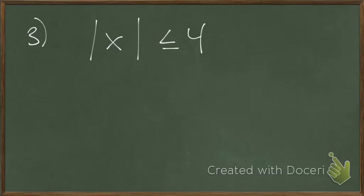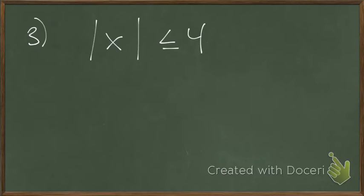The absolute value of x needs to be less than or equal to 4. The reference points are 4 and negative 4. Let's think about answers that work: what's an answer whose absolute value is less than 4? On all of these I start by thinking about what answers work and what answers don't work.